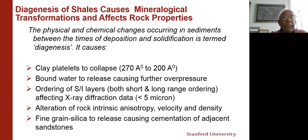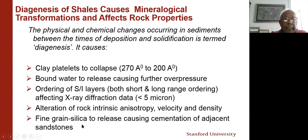This diagenesis of shales involves clay platelet collapse from 270 to 200 angstroms, bound water release, ordering, and intrinsic anisotropy. This is important because it affects both velocity and density. I see the fingerprint of these velocity-density transitions through the thermal history analysis provided by basin history. It also causes fine-grained silica to release, causing cementation of adjacent sandstone — a very important phenomenon I won't cover today.